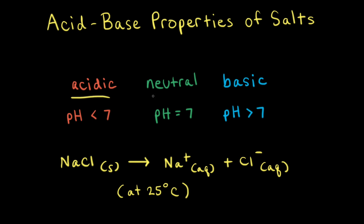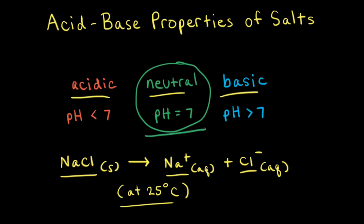Salt can form acidic solutions, neutral solutions, or basic solutions when dissolved in water. For example, if we dissolve sodium chloride in water, solid sodium chloride turns into sodium cations and chloride anions in solution. At 25 degrees Celsius, the aqueous solution of sodium chloride is neutral and has a pH of seven. In a different solution, it's possible for the cation or the anion to react with water and turn the solution either acidic or basic.